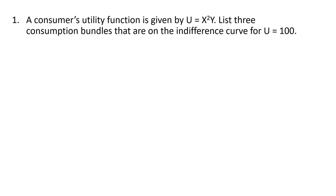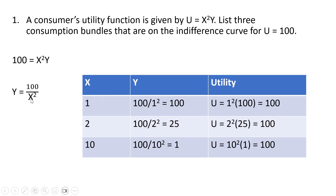Question one. The consumer's utility function is given by u equals x squared times y. List three consumption bundles that are on the indifference curve for u equals 100. First thing we're going to do is set u equal to 100, and then we're going to solve this for y by dividing through by x squared. Now let's put a table together and put in various values for x. If x is 1, 100 divided by 1 squared gives us a y value of 100. This is one consumption bundle that lies on an indifference curve for u equals 100.